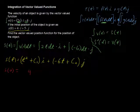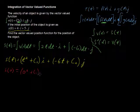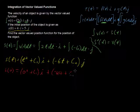s of 0 equals 4i. Well let's do this, I'll plug in 0, I'll plug in s of 0, that's 0 squared plus c sub 1 times i, plus negative 6 times 0, plus c sub 2 times j. Okay.